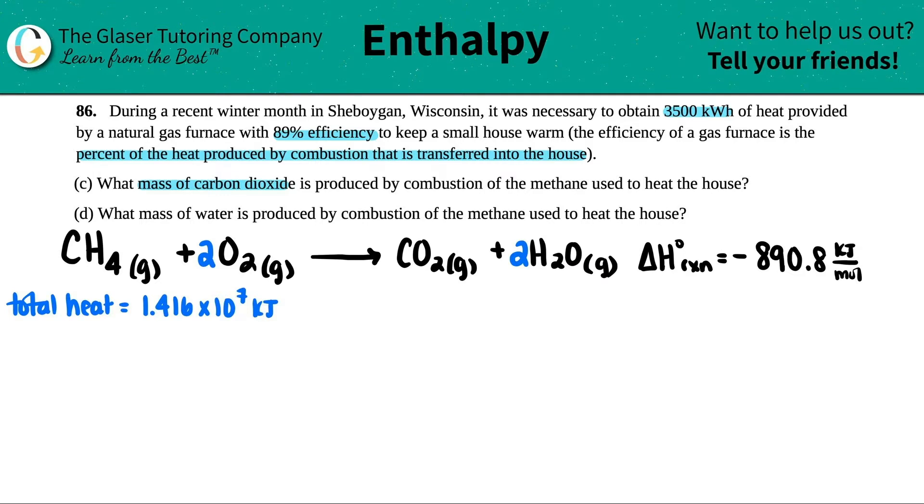So there's a couple of things that we've already done. We're on part C, so I'm going to take stuff from part A. In part A, we found the balanced equation and we also stated that the delta H of this equation for the methane was a release of heat because it's negative and it's 890.8 kilojoules per mole.